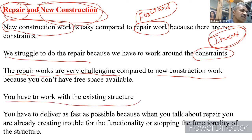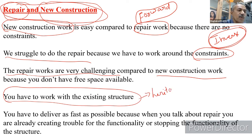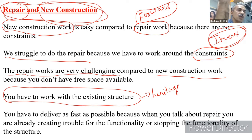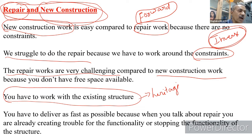For heritage structures, the constraints multiply further. For a normal structure you can add steel to strengthen it, but for a heritage building like a temple, the Agama Shastras say steel should not be used — you have to work with stone only. This becomes a huge challenge. Aesthetics and architecture also become important considerations.